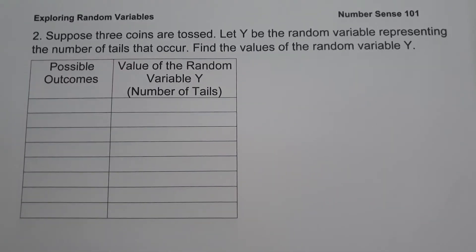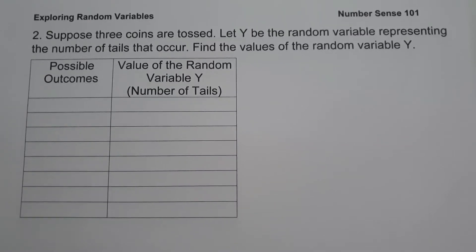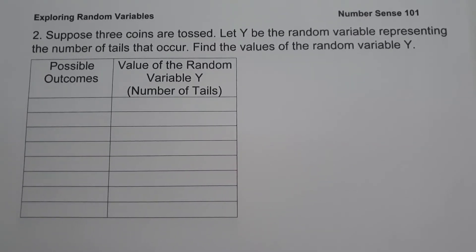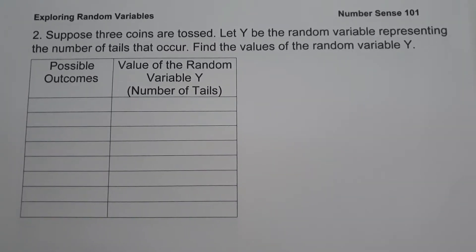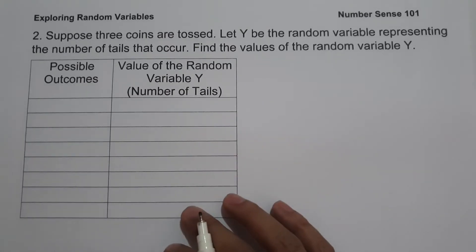On Example 2, suppose three coins are tossed. Let Y be the random variable representing the number of tails that occur. Find the values of the random variable Y. To find the values and complete the given table, let us first illustrate how to determine the sample space.